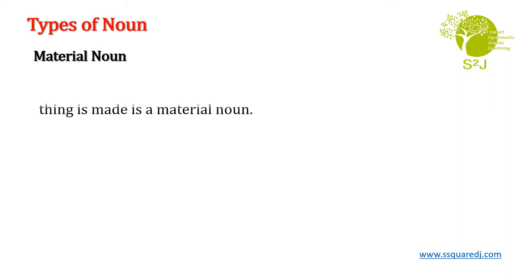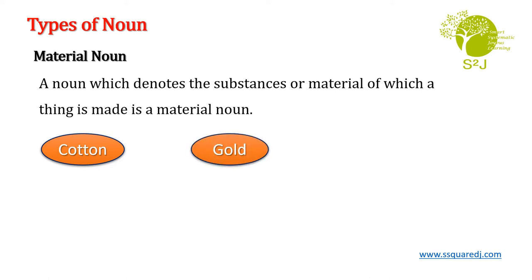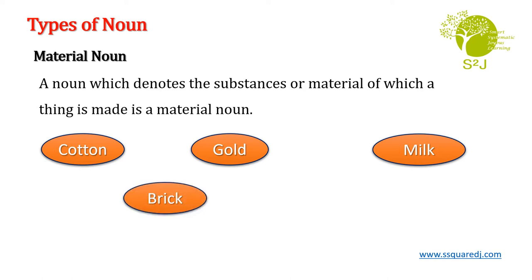Next is material noun. What is a material noun? A noun which denotes the substance or material of which things are made. Those are material nouns — like cotton, gold, milk, brick, earth. All these are material nouns. Things are made up of this material, so they are called material nouns.